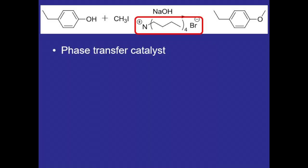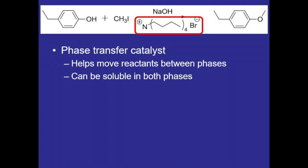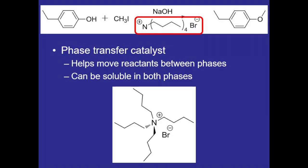One way to do this is to use a phase transfer catalyst. And in this reaction, we'll be using tetrabutyl ammonium bromide. And what a phase transfer catalyst does is it helps move reactants between phases. And it's able to do this because it can be soluble in both an aqueous phase and an organic phase. So if we take a look at tetrabutyl ammonium bromide, we can see large organic groups coming off of the molecule, allowing it to be soluble in an organic solvent. But the charged ionic center allows it to be soluble in the aqueous phase as well.